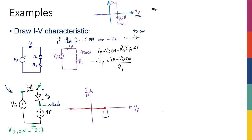How does that look on a current-voltage plot? With the x-axis being Va and y-axis being Ia, this characteristic Ia versus Va is a line. Vd_on and R1 are constants, so this is a line with slope 1/R1, and it hits the y-axis at negative Vd_on over R1.